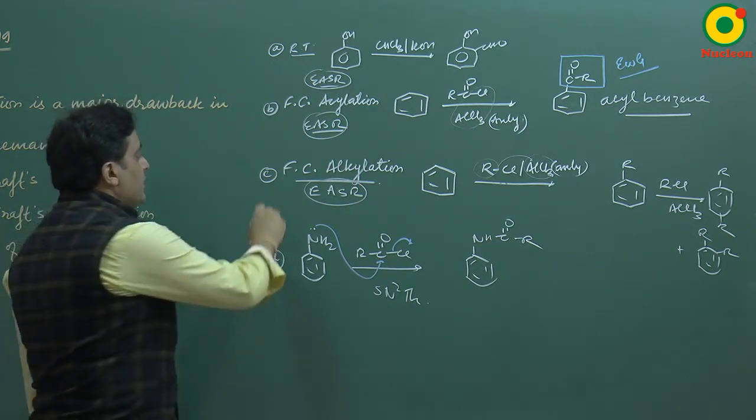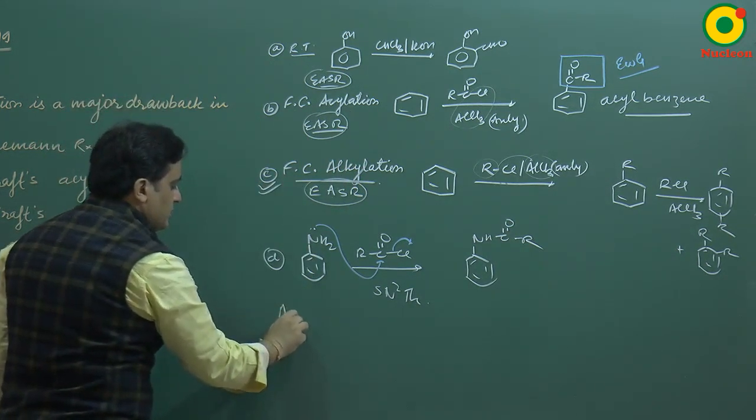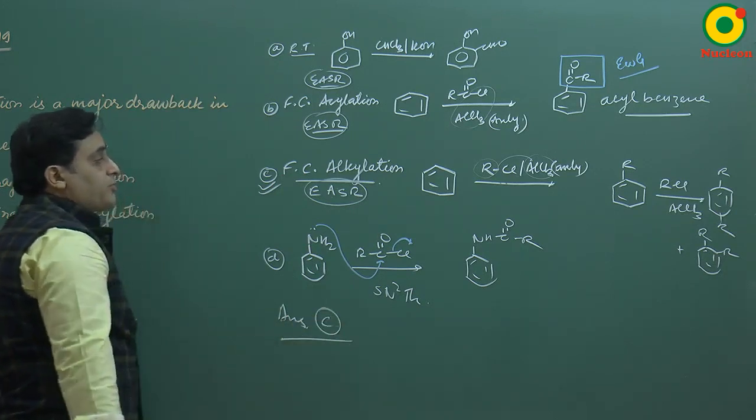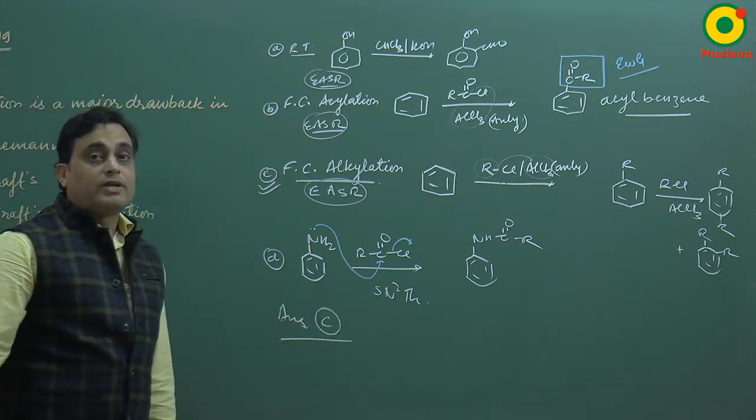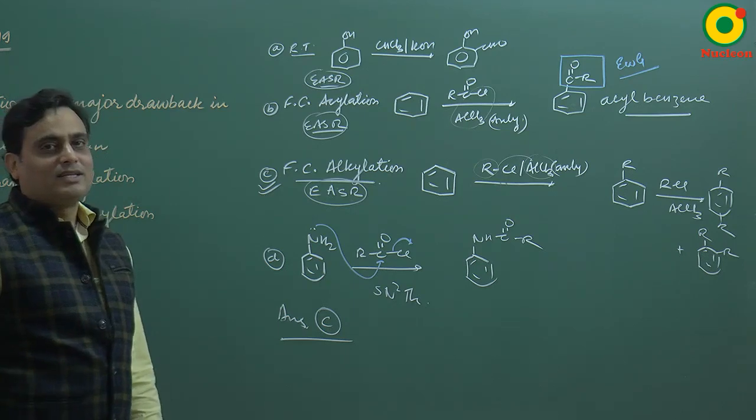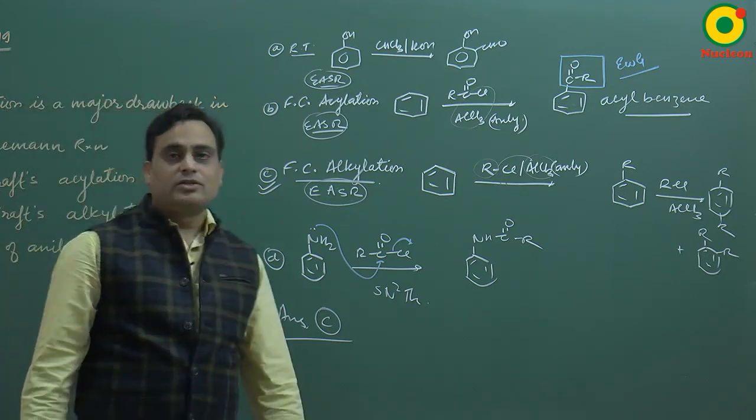What is our answer? The answer is C, because polysubstitution is the problem in Friedel-Crafts alkylation.